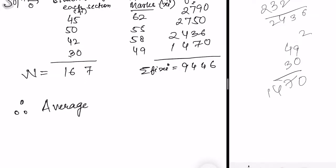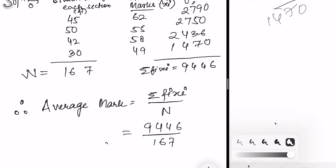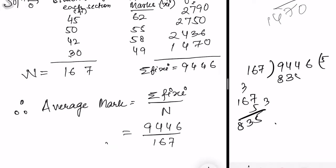Overall average mark would be equal to summation of fi×xi divided by N. What is fi×xi? 9446 divided by 167. Doing the division: 167 into 9446. 167 into 4 goes 5 times. 5×167 is 835. 944 minus 835 gives 109. Bring down 6, making 1096. 167 into 1096.